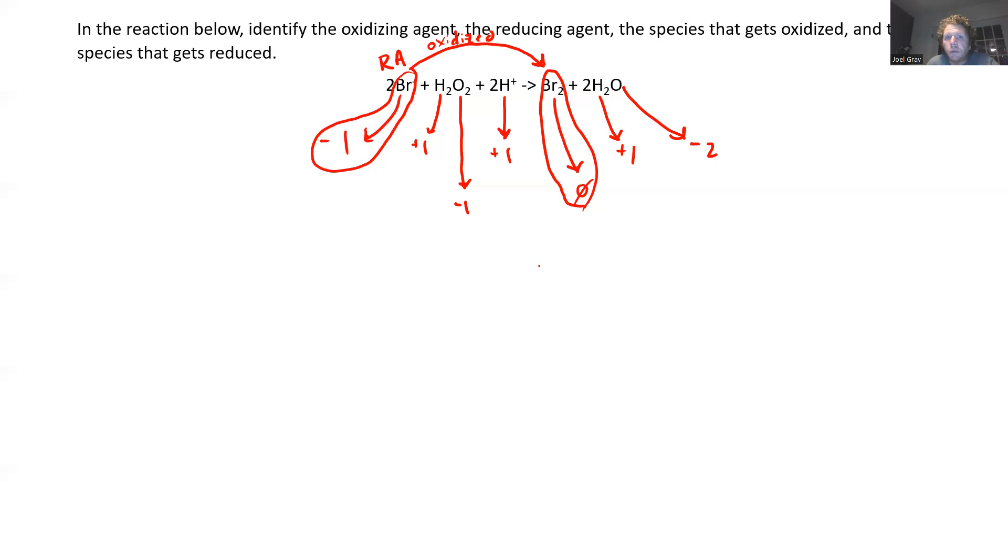So that leaves only oxygen. Oxygen with a minus one charge goes on to be oxygen with a minus two charge. So it gains an electron. So it gets reduced.